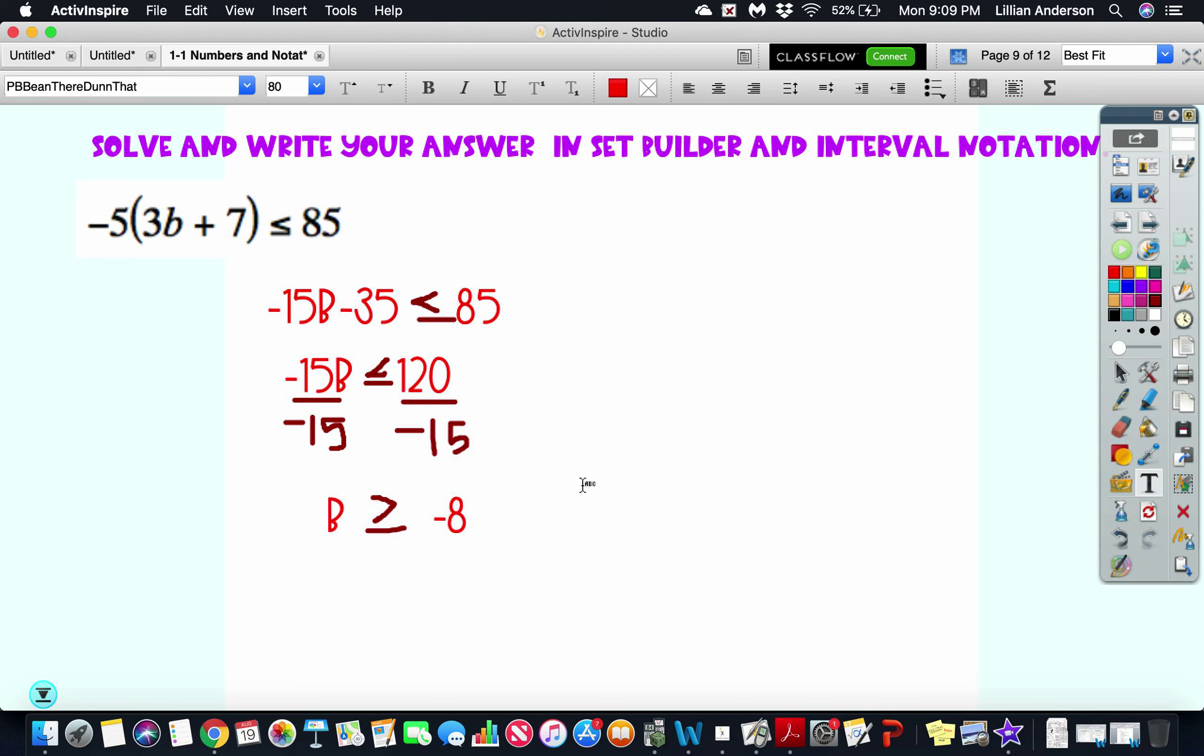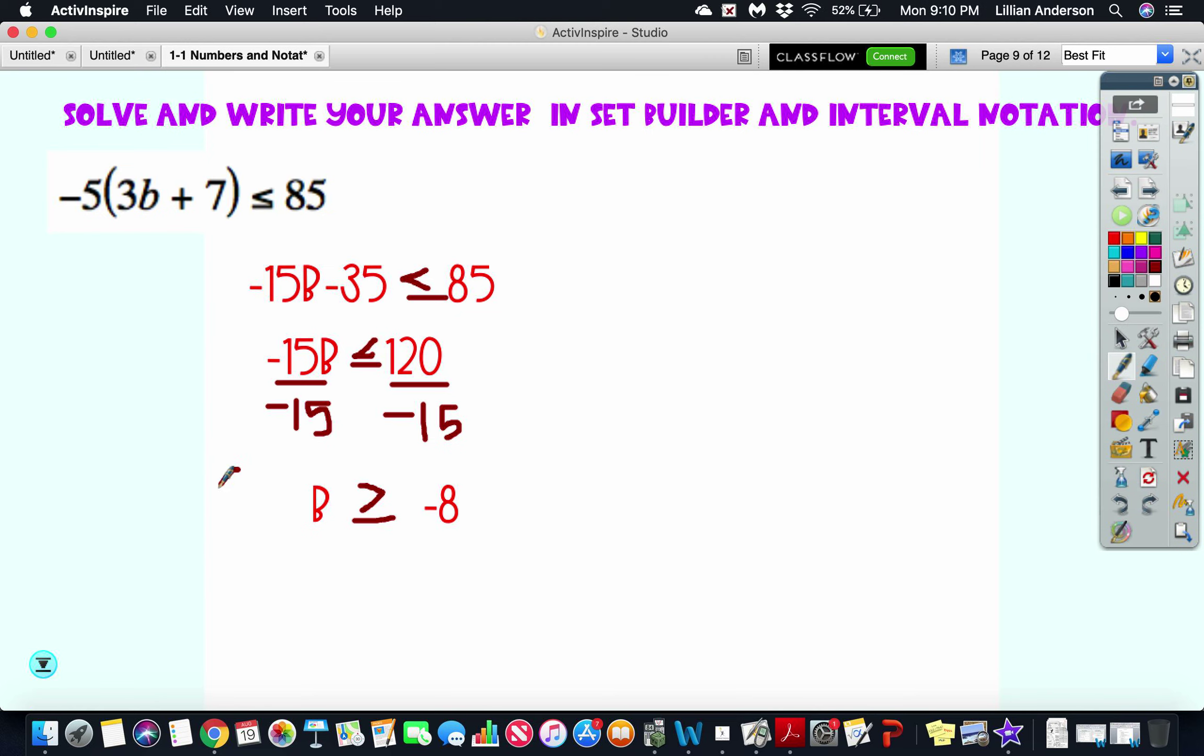Now that we've solved the inequality, we need to write our answer in set builder notation. Set builder notation is the curly brackets, the variable which is b, such that b is greater than or equal to negative 8. What types of numbers are greater than negative 8? These are real numbers, so it's going to be b is the element of all real numbers. All you're doing is solving for the inequality and then writing your answer in set builder notation.